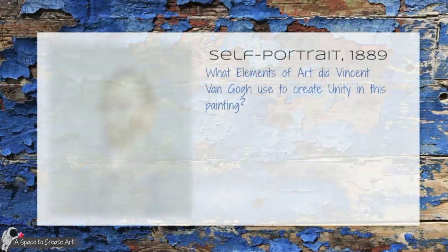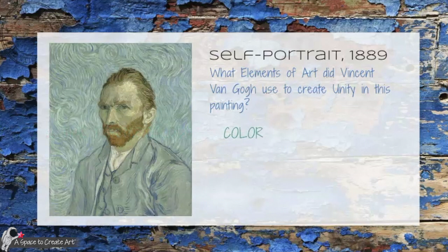In this self-portrait by Vincent van Gogh, he used the elements of art to create unity in the painting. He used color and lines. What other elements of art do you see that he used to create unity?